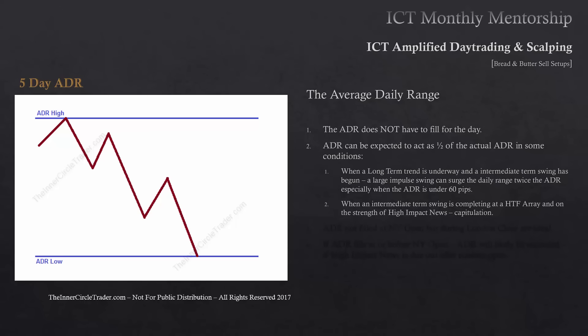The ADR can be expected to act as one-half of the actual average daily range in some conditions. If we have an average daily range of, say, 50 pips and the ADR is calling for 50 pips for the day, if we are in a condition when long-term trends are underway and an intermediate-term swing has begun, a large impulse swing can surge the daily range twice the average daily range, especially when ADR is under 60 pips. 60 pips is a number I like as a filter or buffer — if we see 60 pips or less and conditions are likely to produce a strong directional move, chances are we could probably see the ADR double. And when an intermediate-term price swing is completing at a higher time frame array on the strength of high-impact news, this is usually capitulation — the move's been going on for a while, finally reaching an objective on the daily or weekly levels, and it'll go well beyond what your average daily range is.